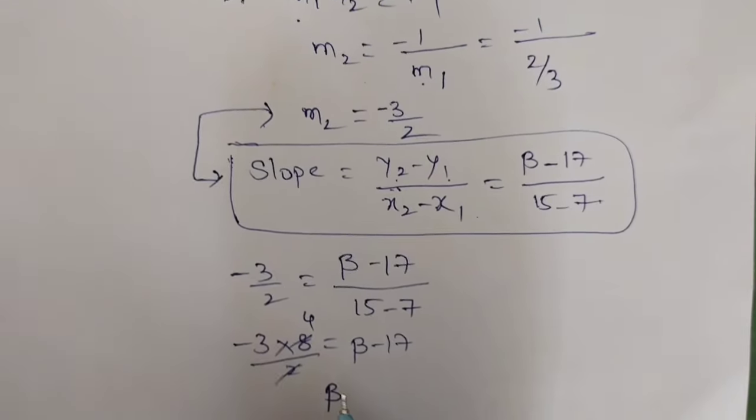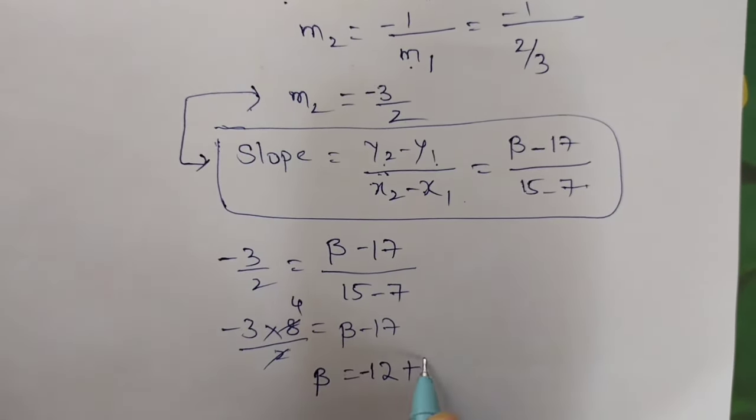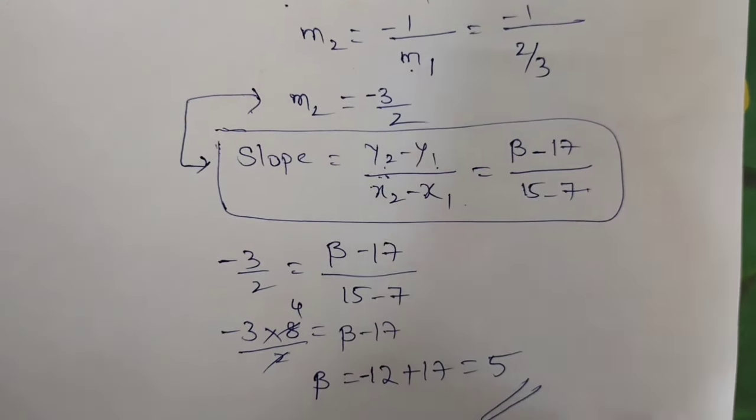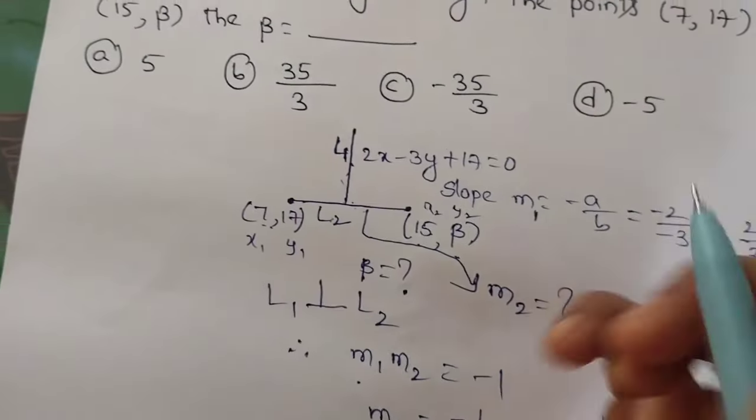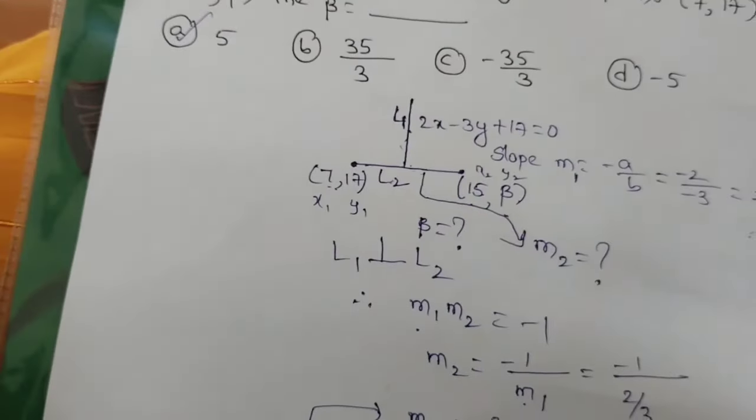Now the beta value is minus 12 plus 17, so the value is 5. The given option A is the answer. Thank you.